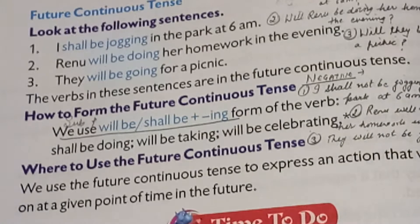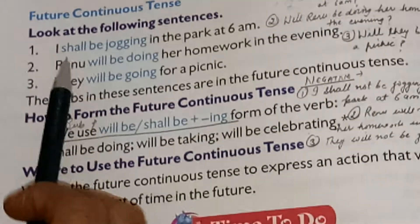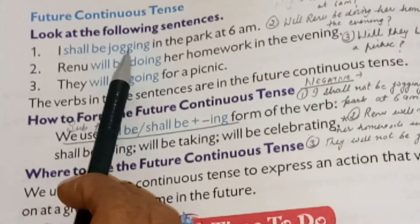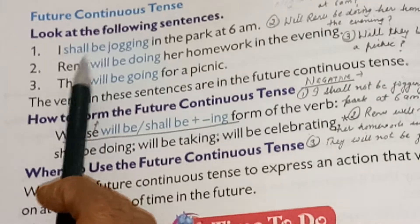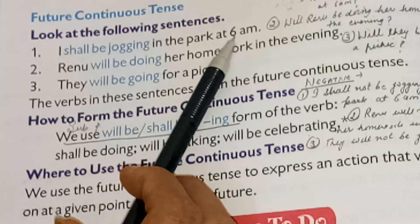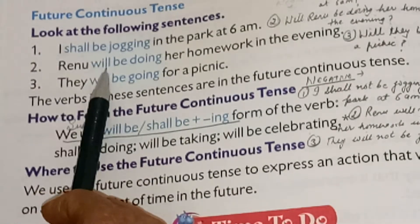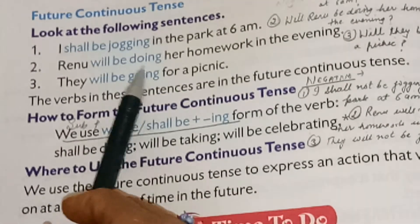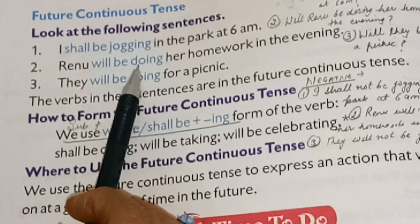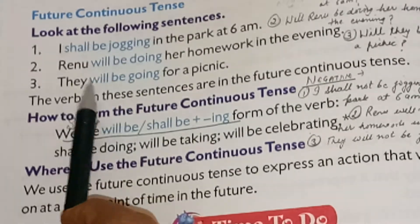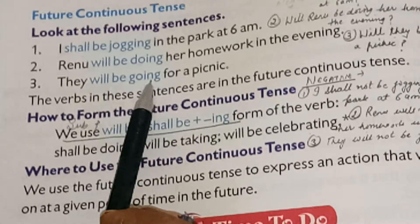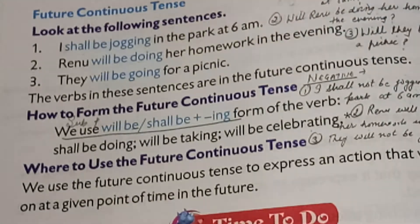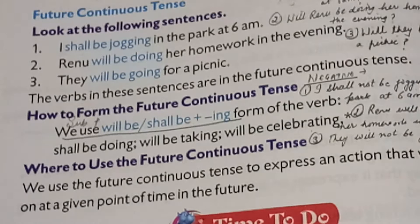Here are the examples. I shall be jogging in the park at 6am. Verb kya hai — jog. Shall be laga diya, shall be jogging in the park. Renu will be doing her homework in the evening — will be doing. Do ka doing bana diya. They will be going for a picnic — will be, go ka going. This is how we have to make the future continuous tense.